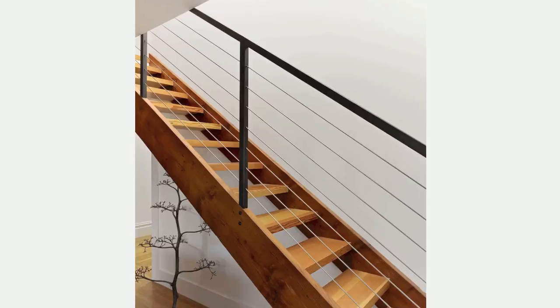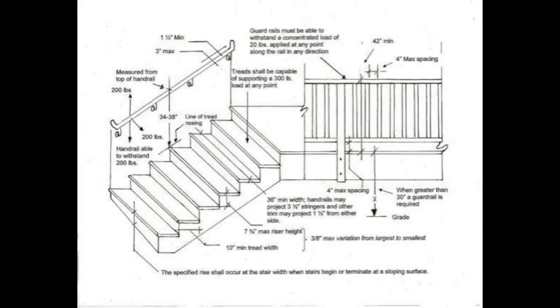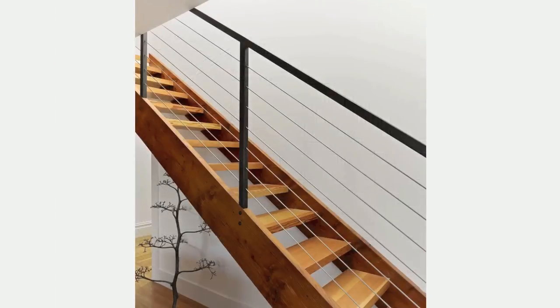As a general rule, handrail is required in residential construction on any stair with three or more risers. It must be present on at least one side of the stair at a minimum height of 34 inches but no more than 38 inches above the front of the tread. Stairs exceeding 30 inches in height and open on one side also require a guardrail. Typically guardrails are required to be 42 inches high with openings no larger than 4 inches in diameter. Many jurisdictions allow the handrail assembly to double as a guardrail, in which case it can be positioned at the handrail height of 34 to 38 inches.